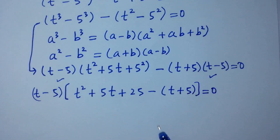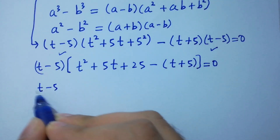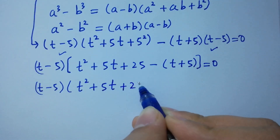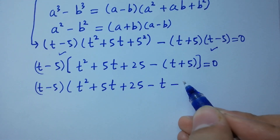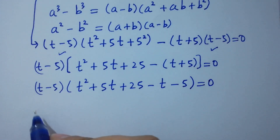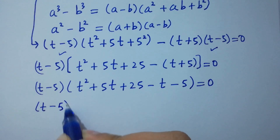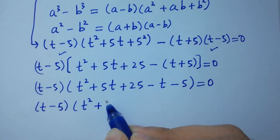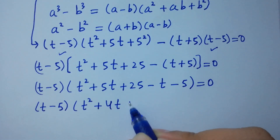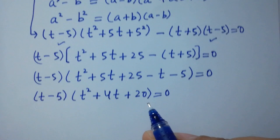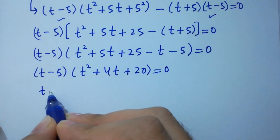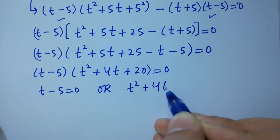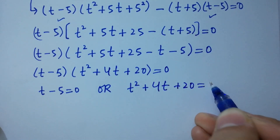So: (t minus 5) times (t squared plus 5t plus 25 minus t minus 5) equals 0. Simplifying inside: t squared plus 5t minus t plus 25 minus 5 gives t squared plus 4t plus 20. So we have (t minus 5)(t squared plus 4t plus 20) equals 0.